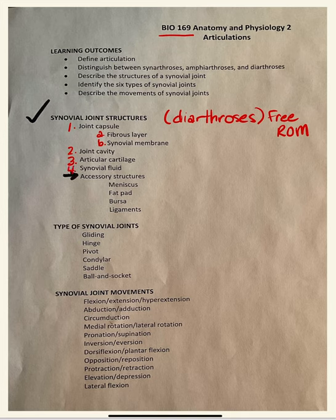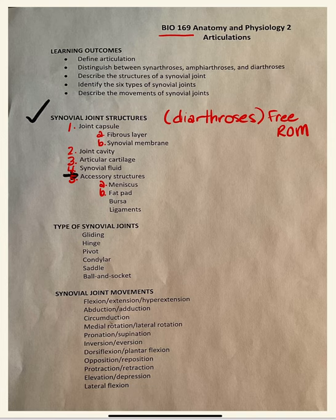We also have articular cartilage, synovial fluid, and accessory structures. The accessory structures include the meniscus, fat pad, bursa, and ligaments. Remember that tendons are associated with muscles.